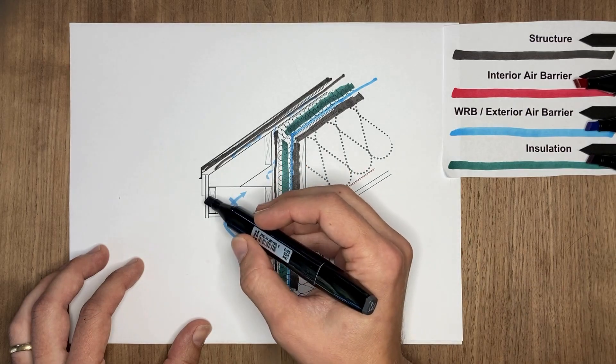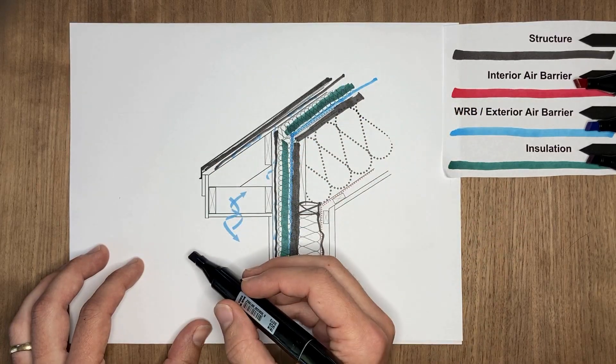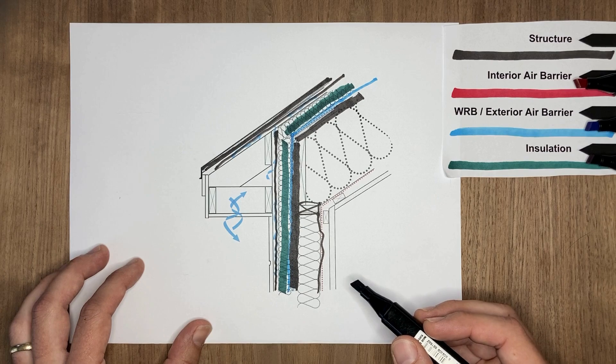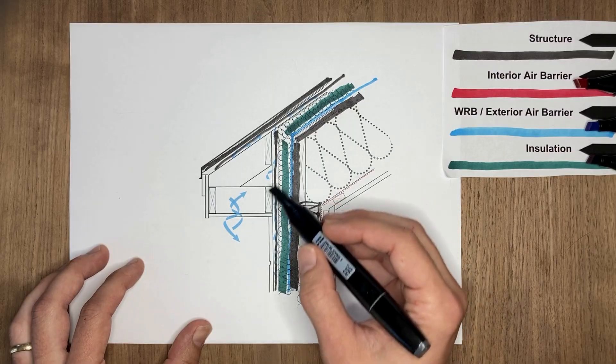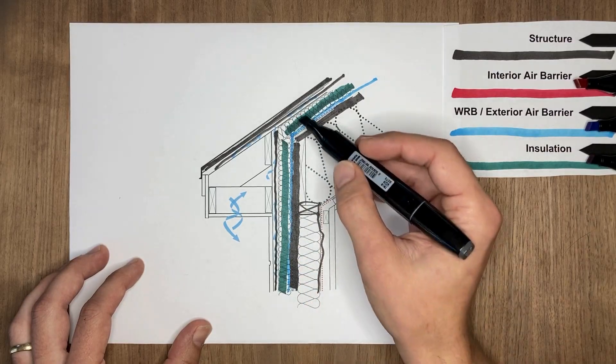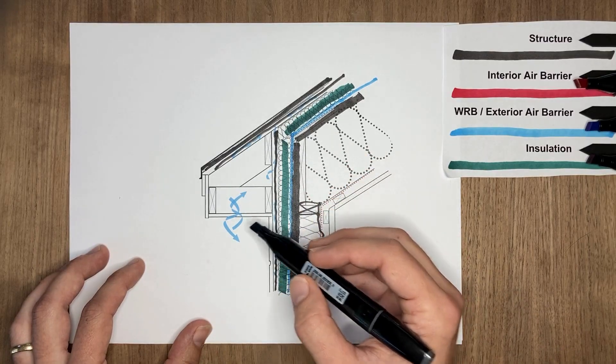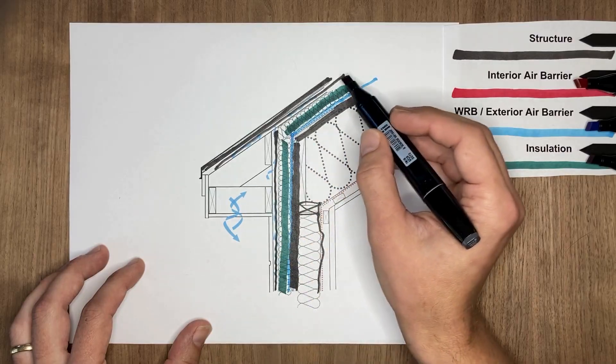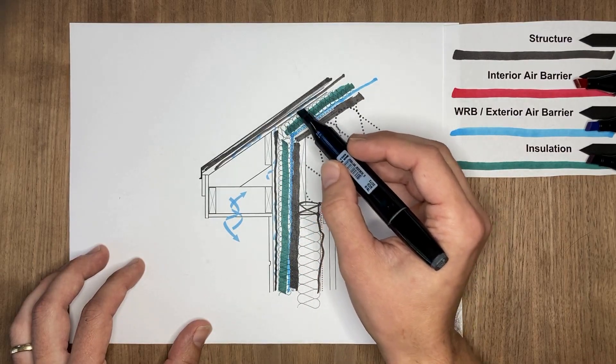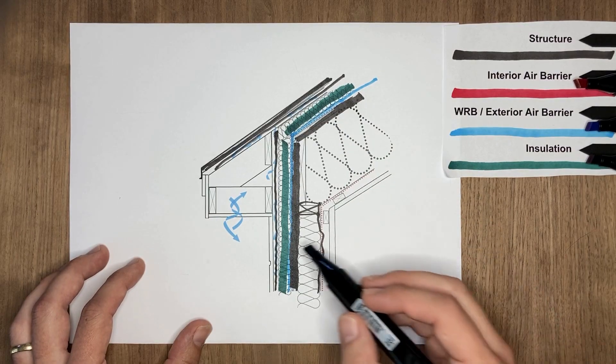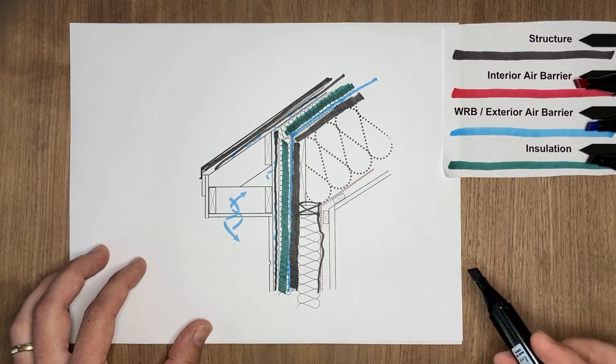But we're creating some type of applied rafter tail system. We still want to shed that water outboard of the assembly with our roof finish, but we don't want those rafter tails to continue through because that could be a thermal bridge concern, but also interrupts this connection. So we're using some type of applied rafter tail and we're allowing venting below this finished roof material, above the roofing underlayment, above that exterior insulation. And we can tie into that same drainage plane for our rain screen on the wall.